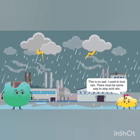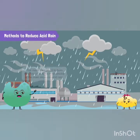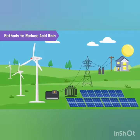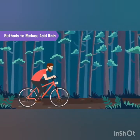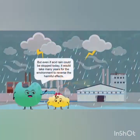We can reduce acid rain by reducing the release of pollutants causing it. This means burning less fossil fuel, since the smoke from fossil fuels is the main cause. We should use alternative ways to generate electricity that do not harm the environment, such as wind turbines and solar panels. We could also walk or travel by bicycle when possible to reduce emissions. But even if acid rain stopped today, it would take many years for the environment to reverse its harmful effects.